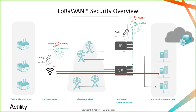But even if security is built into the network, some processes are still left unaddressed, especially during the provisioning steps. The first one is key injection. At the time of manufacturing, we need to provision the device with AppKey and NetworkKey for the LoRaWAN 1.1 standard. This key injection is most often done in the factory when you personalize the device.